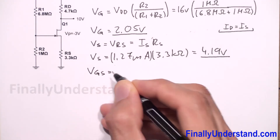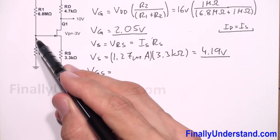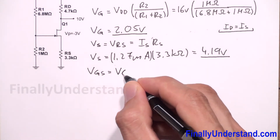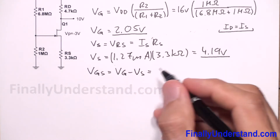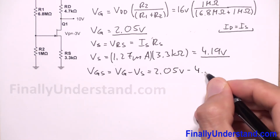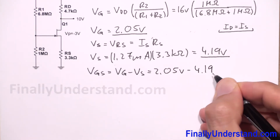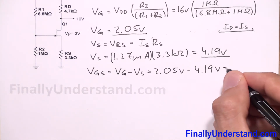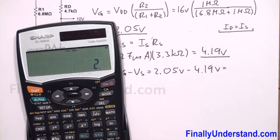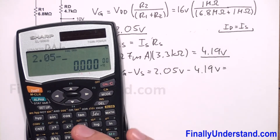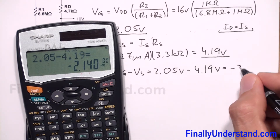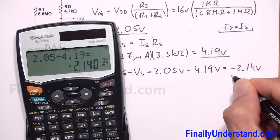Next, we find VGS — the difference between the gate voltage and the source voltage. VGS = VG - VS = 2.05 volts - 4.19 volts = negative 2.14 volts.